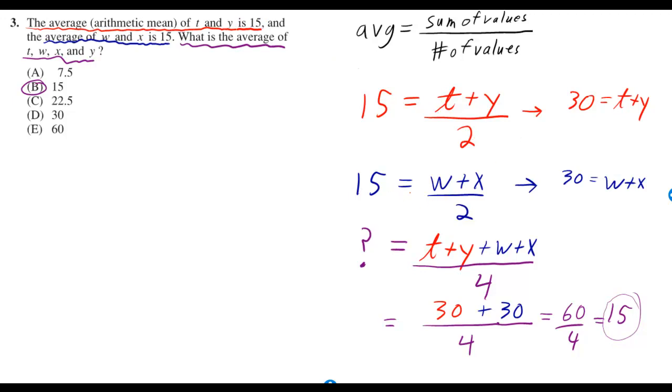I do exactly the same for W and X, the part that I underlined in blue. And they're asking us for the average of T, W, X, and Y. So then I've got to add up all four of those, but then I'm dividing by 4, because I added up four values.